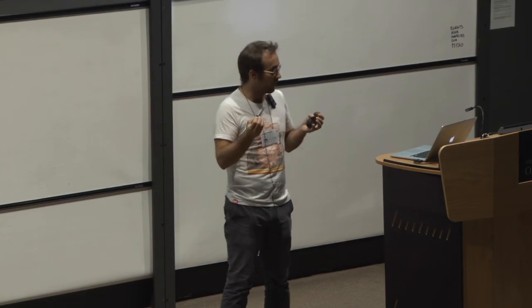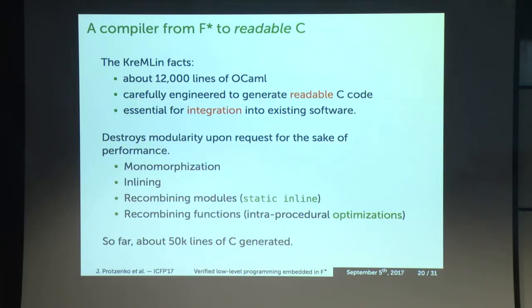A key insight in Kremlin is that we want to get rid of modularity — which is great for proofs — in order to allow a lot of optimizations at the C level. Kremlin does monomorphization and inlining; nicely separated F* functions with small pre- and post-conditions are recombined into a big C function to allow the C compiler to trigger all intraprocedural optimizations. Your whole F* proof development may span several modules, but we recombine them into a single C file and mark private functions as static inline.